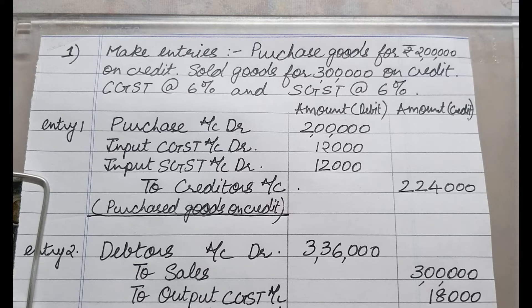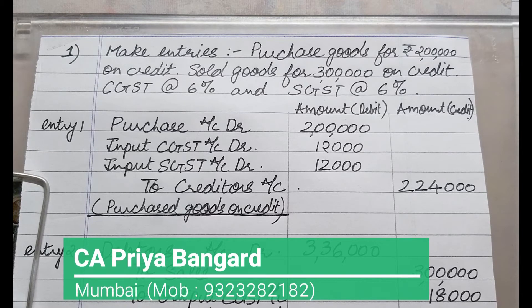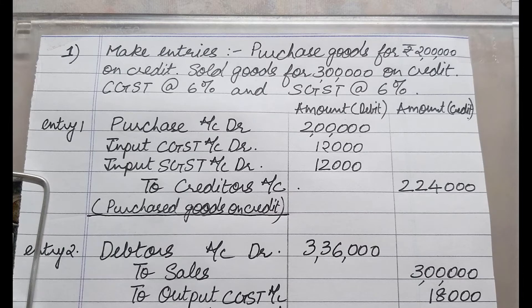Now I am helping you with a GST entry. What is GST? It's Goods and Services Tax and there are two types of GST: CGST and SGST. C stands for Central and S stands for State. So one part of GST the central government is getting and the other part the state government. When you purchase any goods, the keyword is input GST — input CGST and input SGST. When you are selling, the keyword is output GST — output CGST and output SGST.